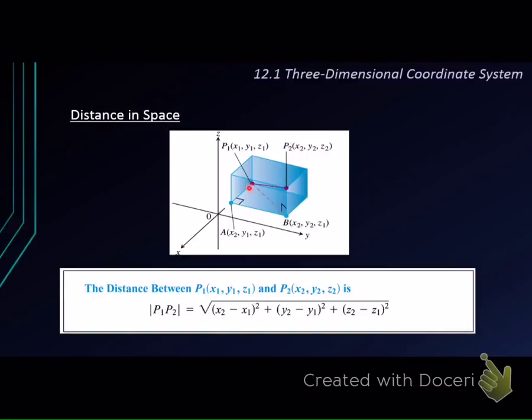And to find the distance between these two points, we just need to use this formula: the square root of (x2 - x1)² plus (y2 - y1)² plus (z2 - z1)².